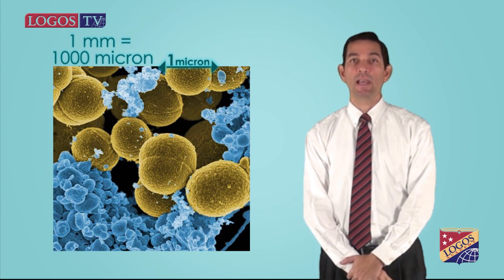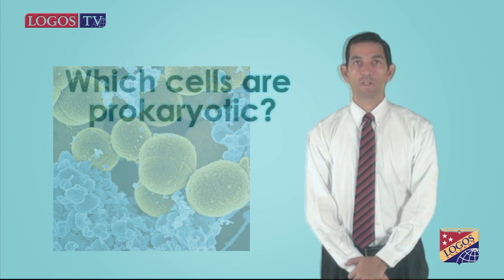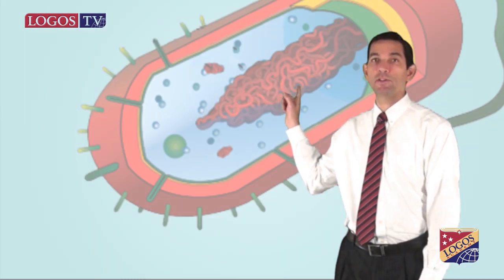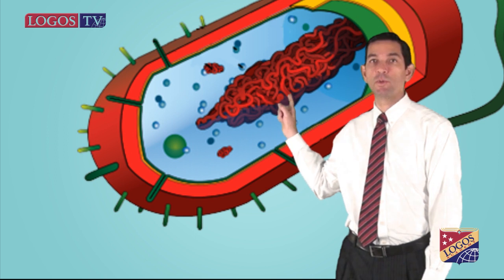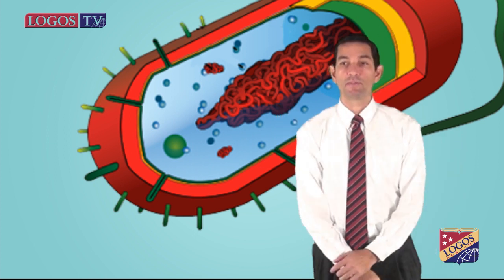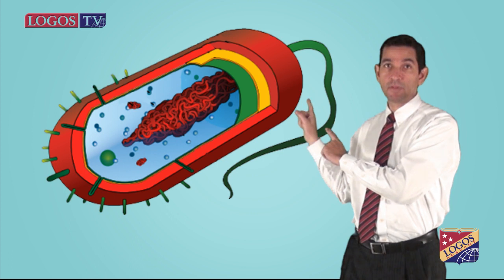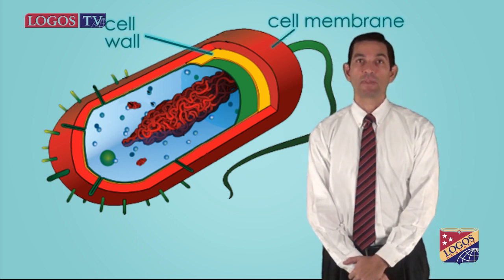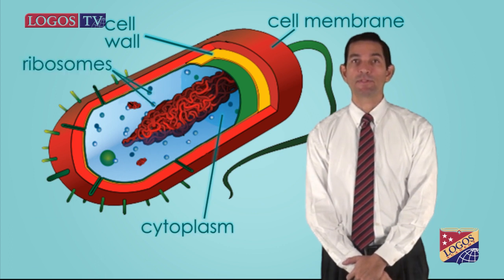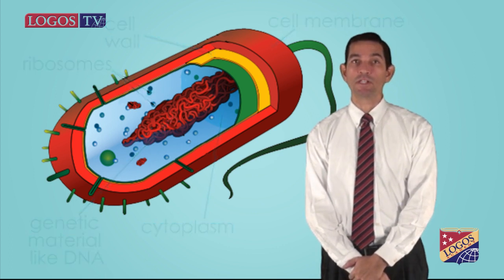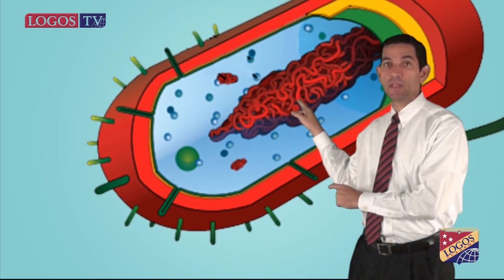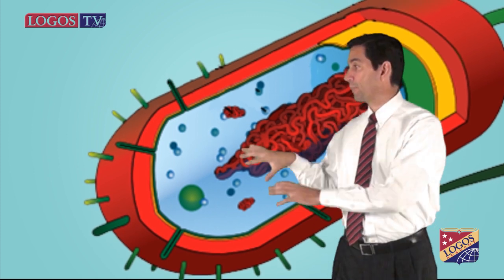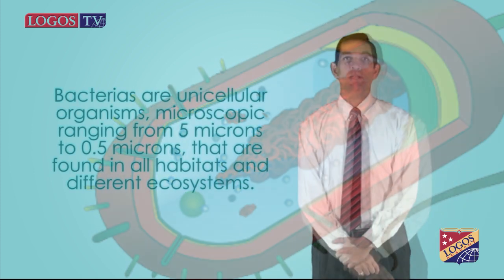These cells have few structures and lack a nuclear region. Which cells are prokaryotic? Bacteria and archaea are prokaryotic because they don't have a nuclear region where the DNA is enclosed. As you can see, these cells have all the basic parts like a cell wall, cell membrane, cytoplasm, ribosomes, and genetic material, which is one circular DNA, but the DNA material is spread in the cytoplasm.